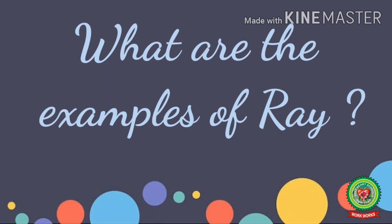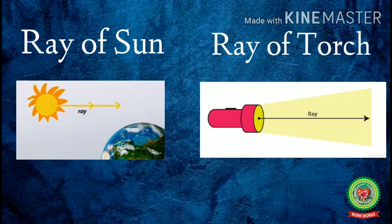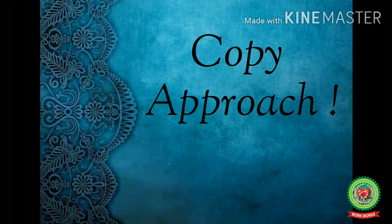What are the examples of ray? You can easily learn the examples of ray. Ray of sun — because it has a starting point but no ending point; its starting point is the sun itself. Second is ray of torch — its starting point is the torch itself and it has no ending point. Many other examples can be there.